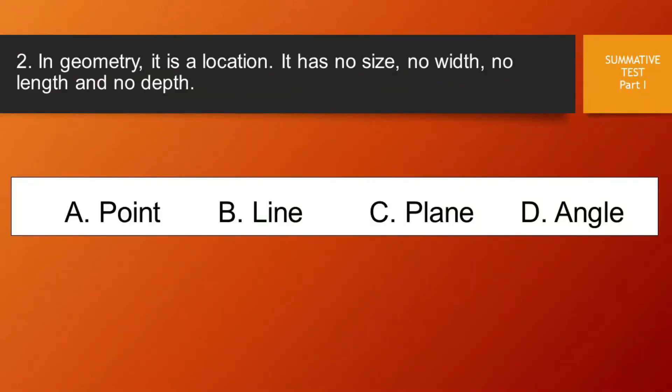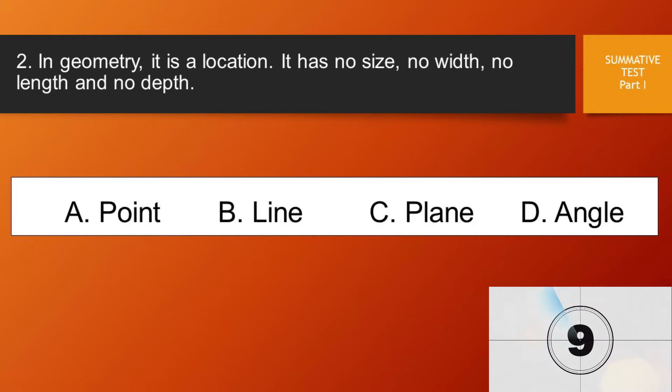Question 2. In Geometry, it is a location. It has no size, no width, no length, and no depth. Letter A, Point. Letter B, Line. Letter C, Plane. Or Letter D, Angle.